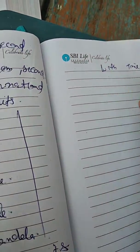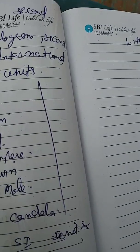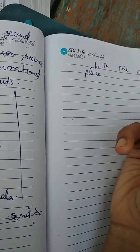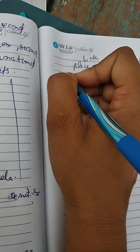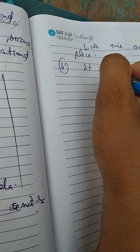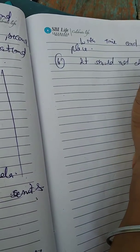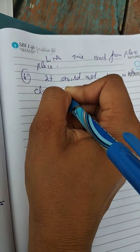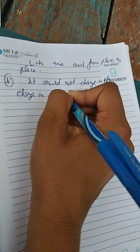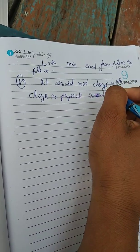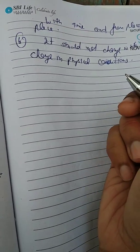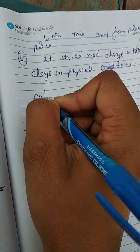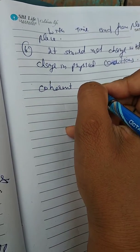Fifth, it should not change with time and from place to place. Clear. And last, sixth one, it should not change in physical conditions like temperature, pressure, volume. Clear. Next is coherent system of units.